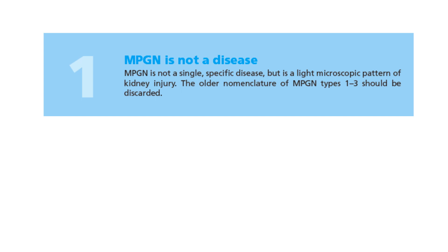The first important point is that membranoproliferative glomerulonephritis (MPGN) is not considered a disease. There is no disease called membranoproliferative glomerulonephritis. MPGN is a light microscopic pattern of kidney injury, not a disease. So when you find MPGN in the pathology, it is not indicating a specific disease — it is indicating a specific pattern with multiple etiologies that must be searched for.